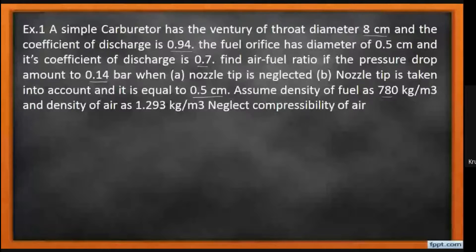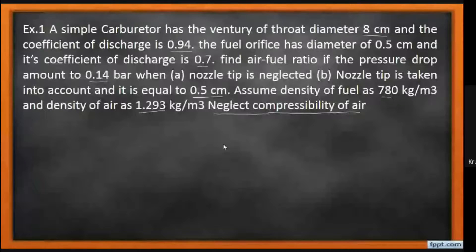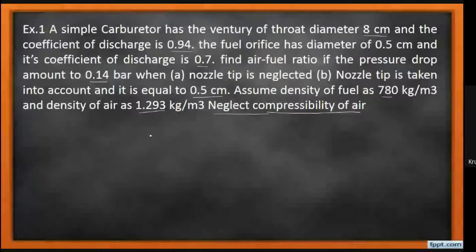Assume the density of fuel is 780 kg per meter cube and the density of air is 1.293 kg per meter cube. Neglect the compressibility of air — this means we need to go for the approximate analysis method, not the exact analysis method. Since the numerical mentions neglecting compressibility, it indicates approximate analysis of a simple carburetor.